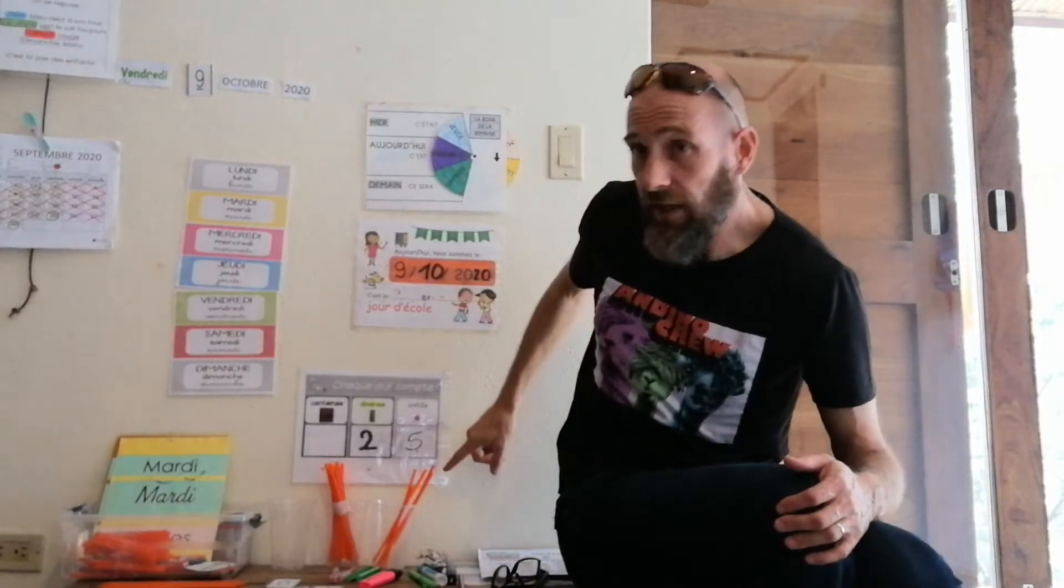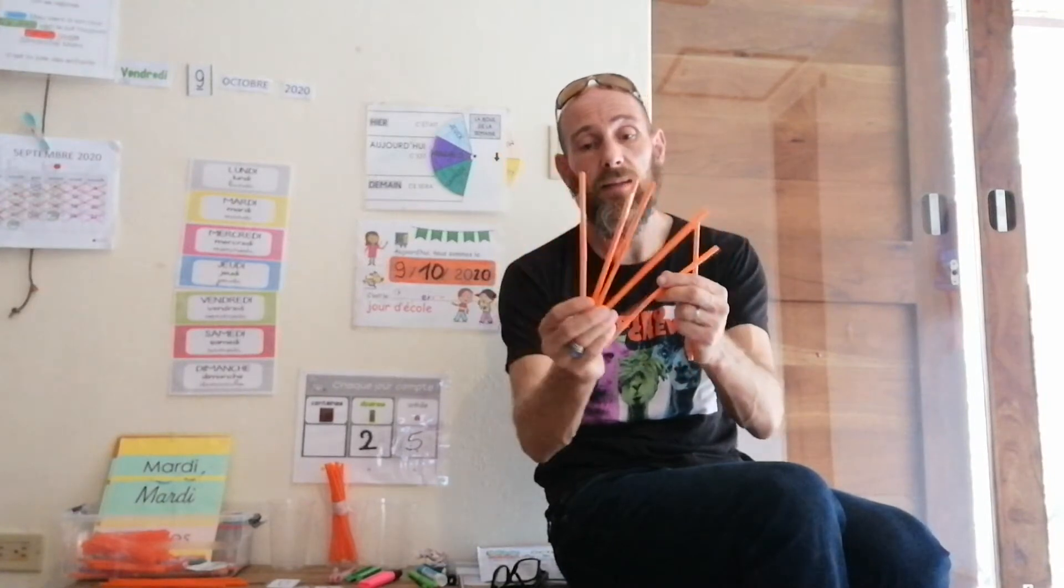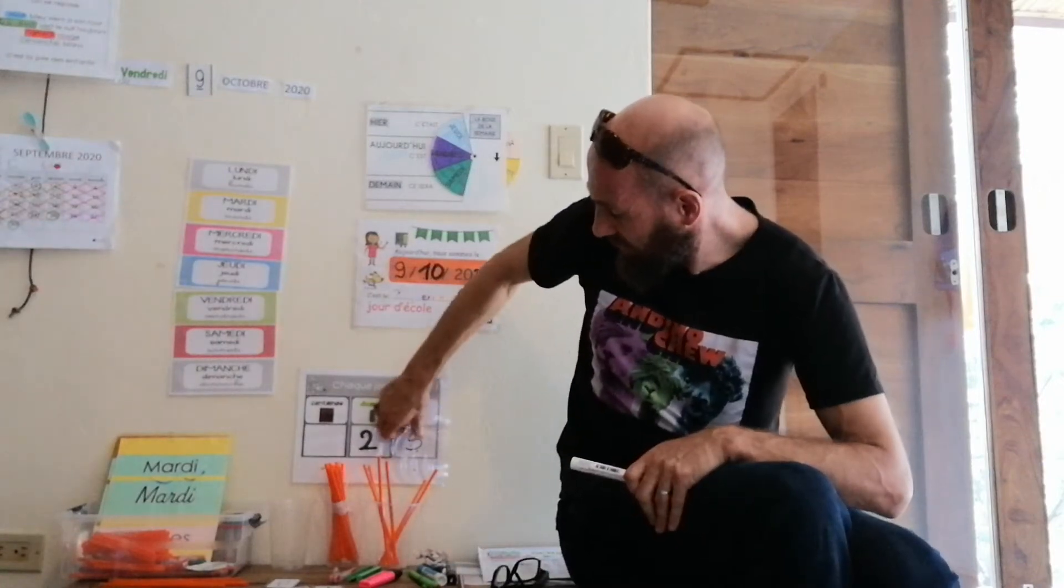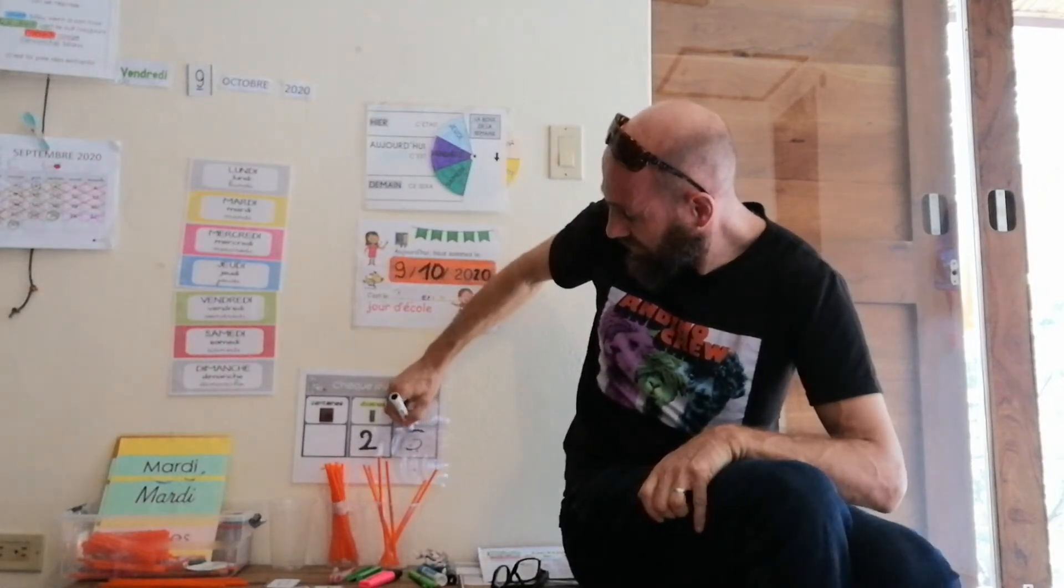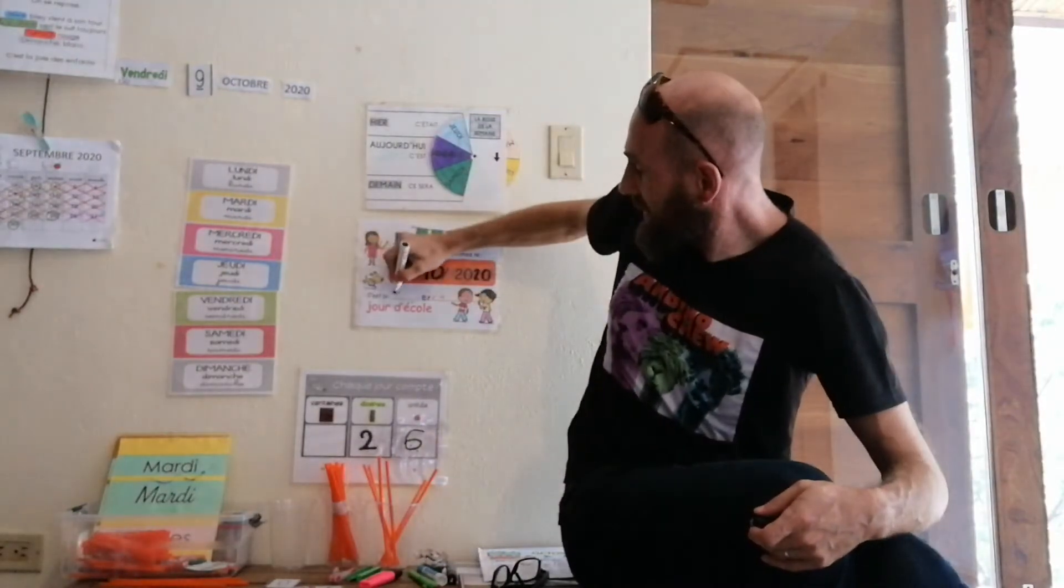Alors, aussi, rappelle-toi, hier, c'était le 25e jour d'école. Hier, il y avait 5 unités, donc 1, 2, 3, 4, 5, et comme chaque jour compte, je rajoute un jour. Nous avons donc 1, 2, 3, 4, 5 et 6 pailles, soit 6 unités, 2 paquets de 10, 2 dizaines, et je peux remplacer le 5 par le 6. Aujourd'hui, c'est le 26e jour. Et tu vois que chaque jour compte. Chaque jour, nous mettons une paille en plus et chaque jour, il y a un jour de plus.